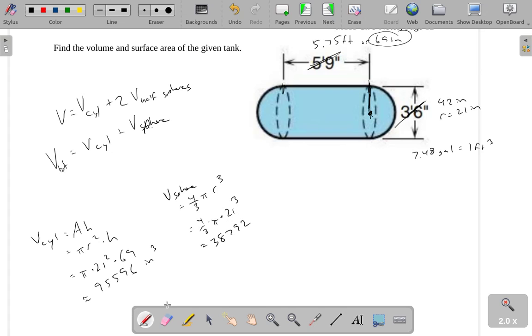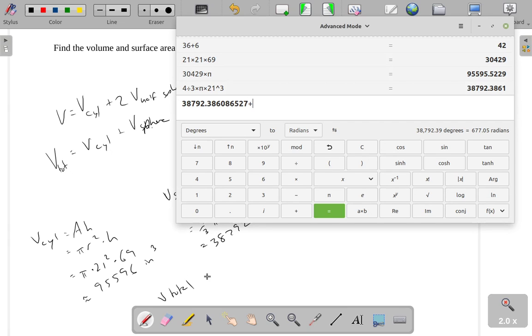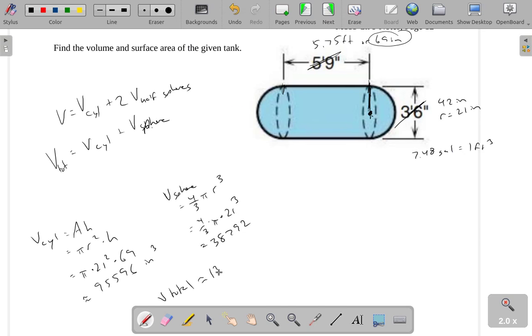And when I add these together, that gives me the total volume. 95,596. Add those together, we get 134,388 cubic inches.